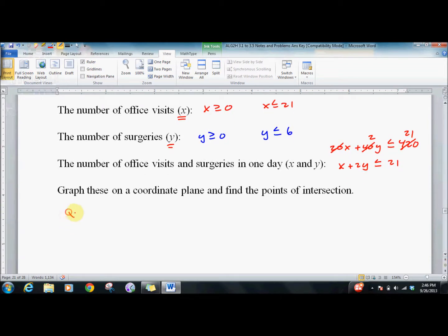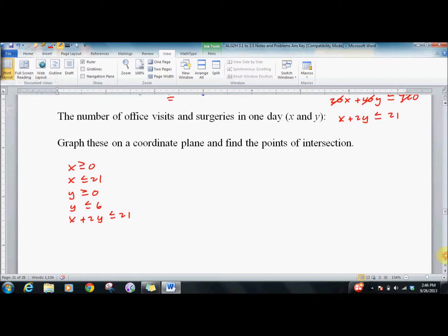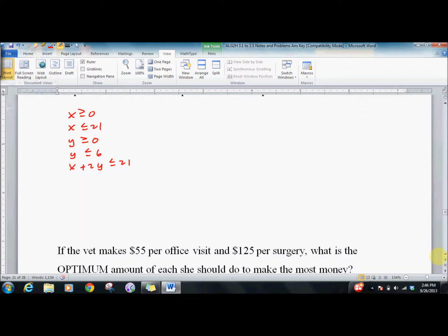So here's my system: x is greater than or equal to 0, x is less than or equal to 21, y is greater than or equal to 0, y is less than or equal to 6, x plus 2y is less than or equal to 21. That means y is less than or equal to negative one-half x plus ten and a half.